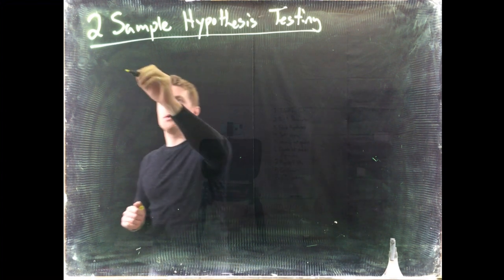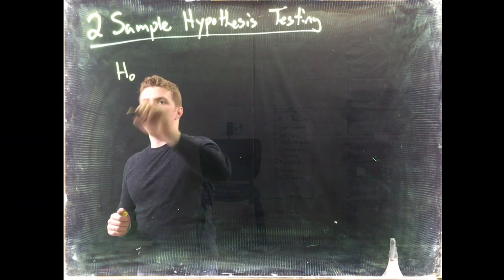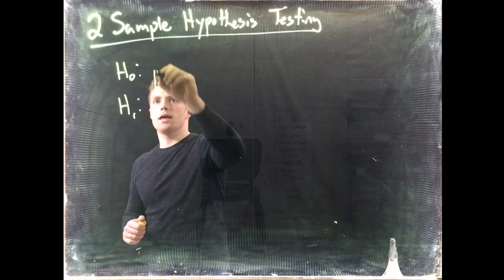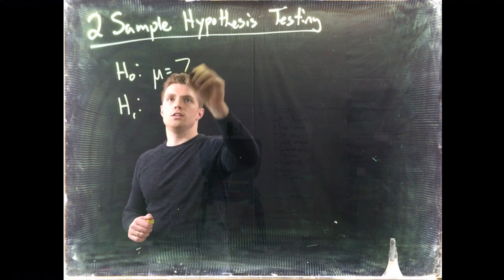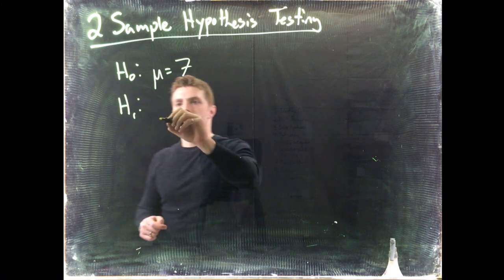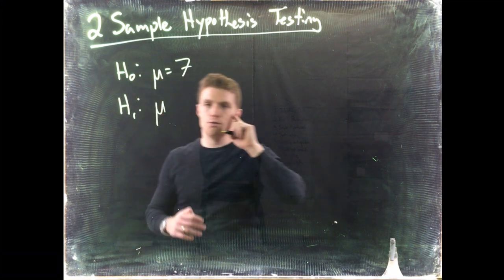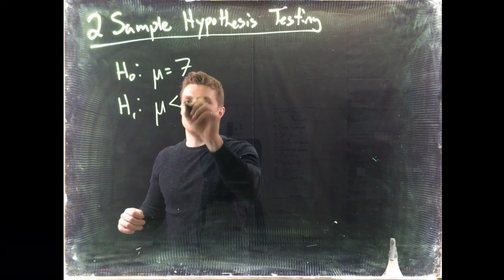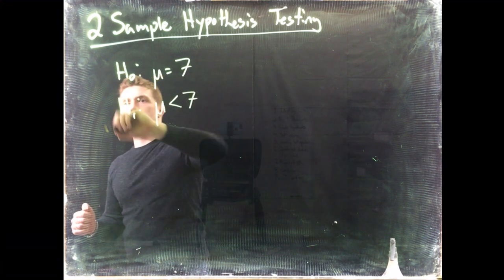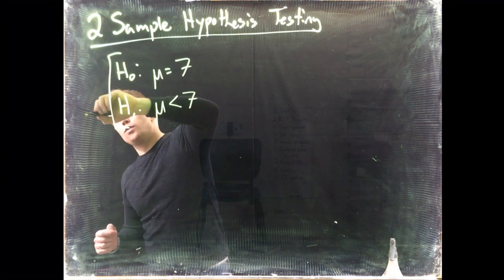So originally when we wrote out our null hypothesis and our alternative hypothesis, we were doing something like μ equals 7, the true mean of some population is equal to 7, and the alternative we think that it's actually less than 7. All right, so that's for one sample.